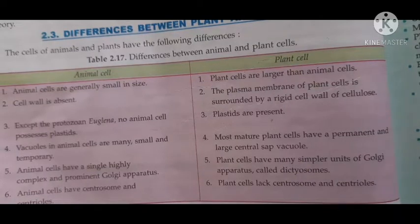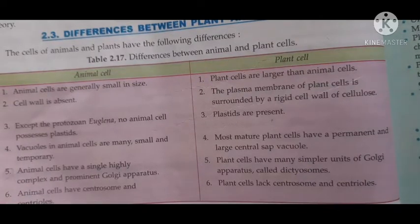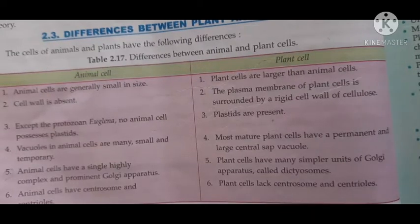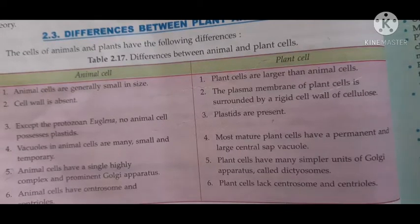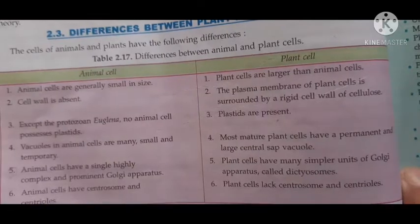Plant cells have a permanent and a large central sap vacuole. Then you can write this: animal cells have centrosome and centrioles, plant cells lack centrioles and centrosome.